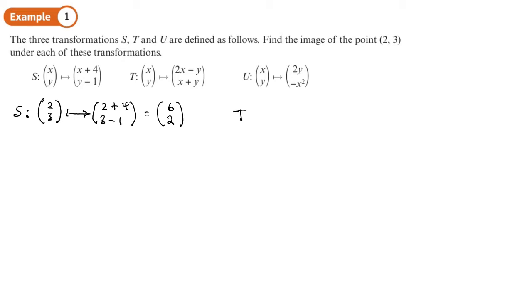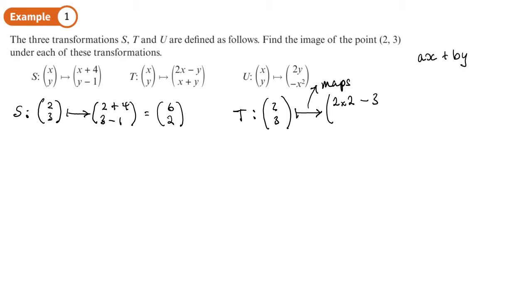Next, transformation T. T takes the original points (2, 3) and maps them. The top component is 2 times x minus y, which is 2×2 − 3 = 1. The bottom component is x + y, which is 2 + 3 = 5. So T maps (2, 3) to (1, 5). Note that the top row isn't always just x and the bottom isn't always just y — you can have a mixture of x's and y's.